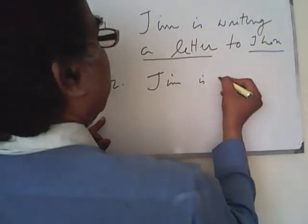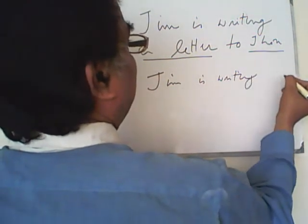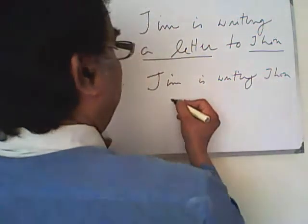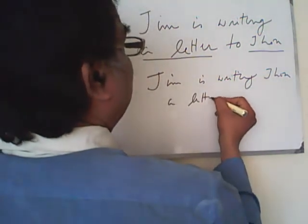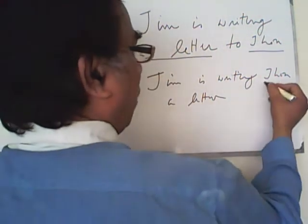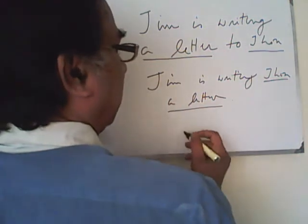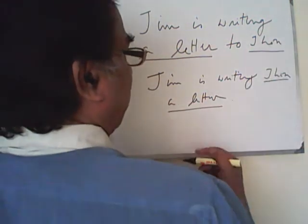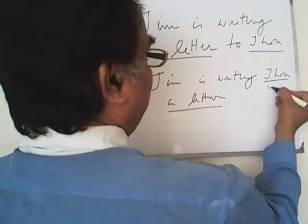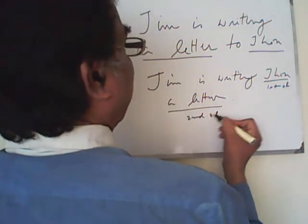He is writing John a letter. Now you are watching: the second one — John is the object, and the letter is the other object. But we do not need any other preposition. The first one is the first object, and the second one is the second object.